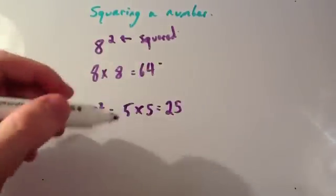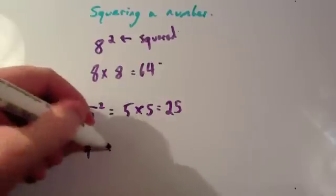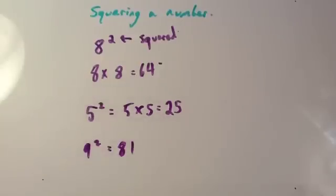As you get better at this, you won't need to write out the method. So for instance, if you were going to do 9 squared, 9 times 9 is 81. So you could just write 81.